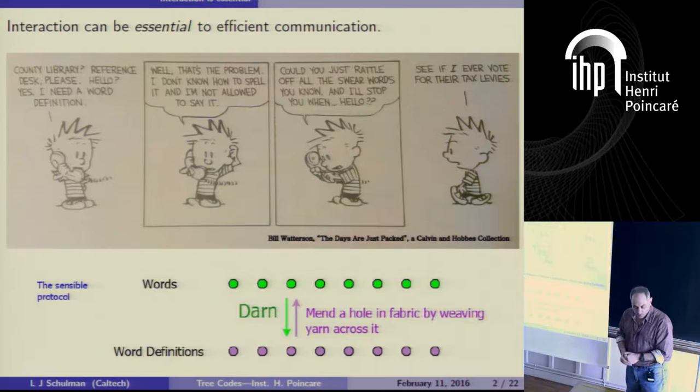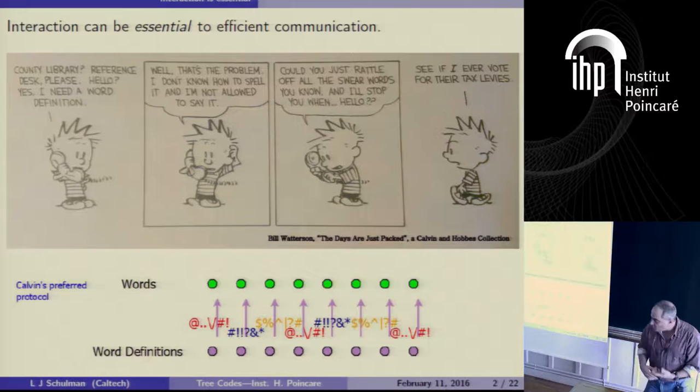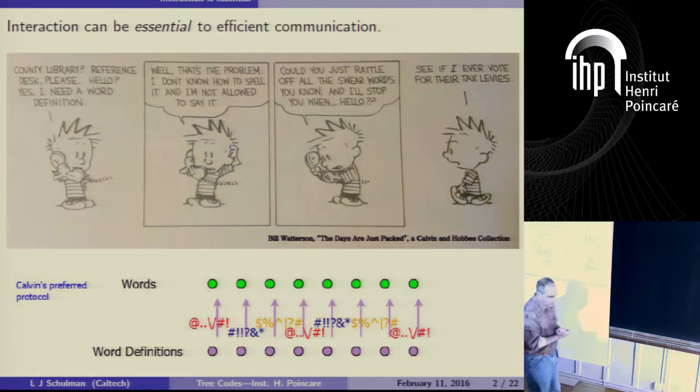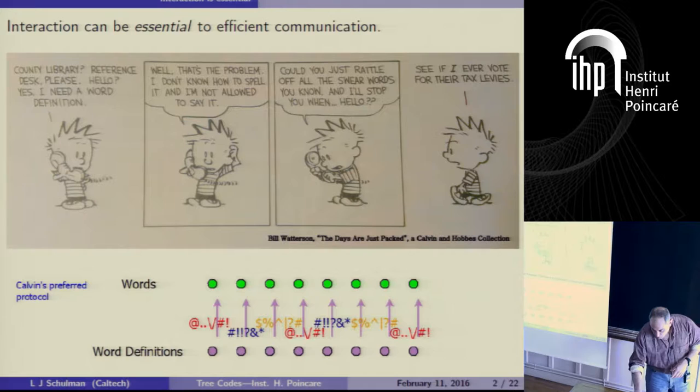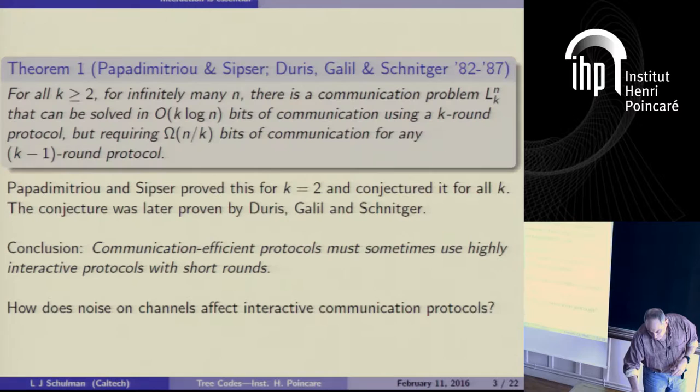So this is the sensible protocol — it's a two-round protocol. Unfortunately, there's another protocol which Calvin is sort of being forced to employ: the one-round protocol, where the librarian gives definitions of all possible curse words. That's communication-wise much less efficient, which is part of the humor of the strip.